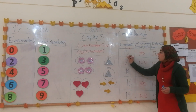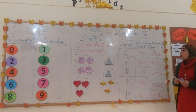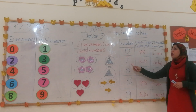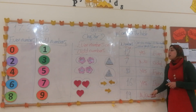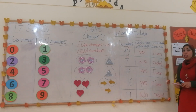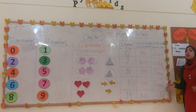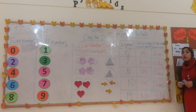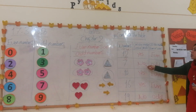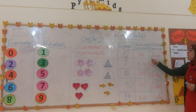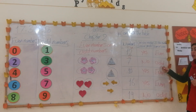Now, seven — is seven even or odd? Seven is odd. So we cannot make two equal groups from an odd number. Seven is an odd number.